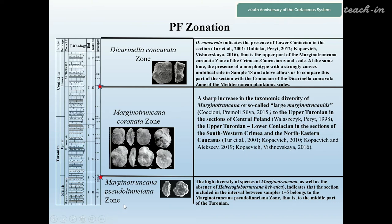The lower part of the Shapsuk quarry section, samples number one to five, is characterized by high diversity of species of Marginotruncana, as well as the absence of Helvetoglobotruncana helvetica. This indicates that the interval from samples one to five belongs to the Marginotruncana pseudolinneiana zone, corresponding to the middle part of the Turonian.